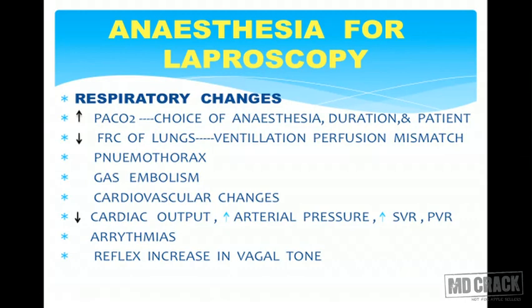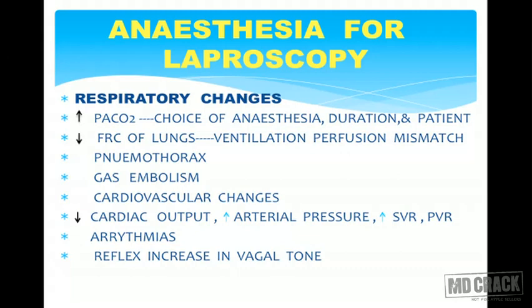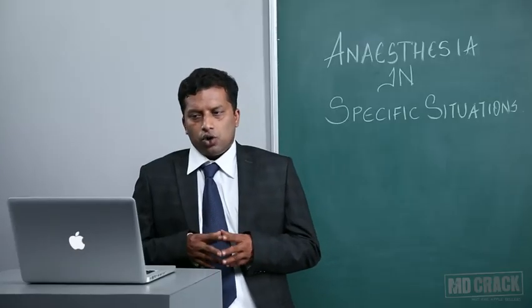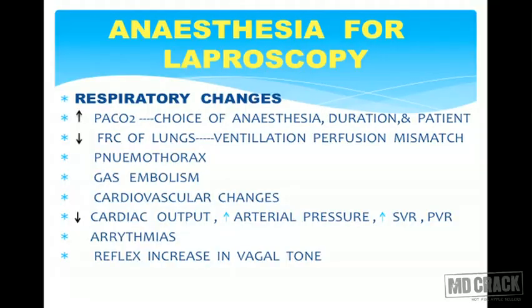Once pneumoperitoneum is created with intra-abdominal pressure of 14 to 20 mmHg, various physiological changes occur. Respiratory changes include an increase in PaCO2; the amount of increase depends on the type of anesthesia, duration of surgery, and the systemic status of the patient. There is also a decrease in functional residual capacity of the lung, similar to what happens in pregnant females, resulting in ventilation-perfusion mismatch. Pneumothorax and gas embolism are added risk factors.